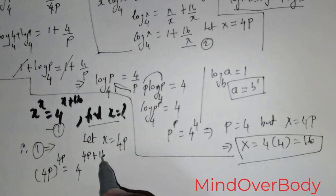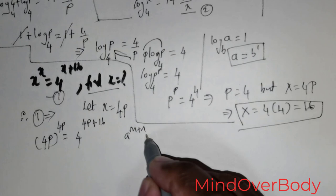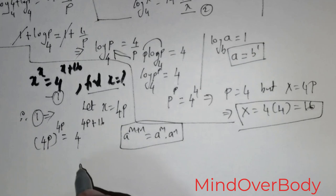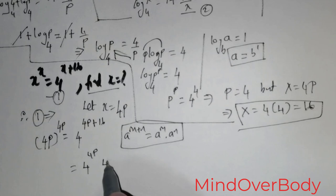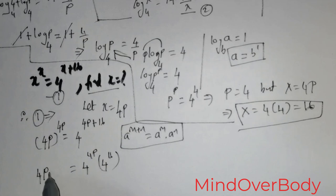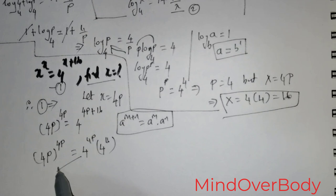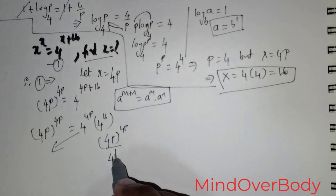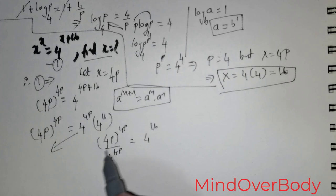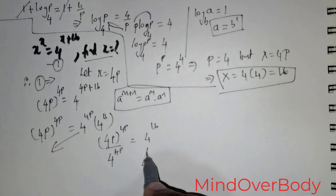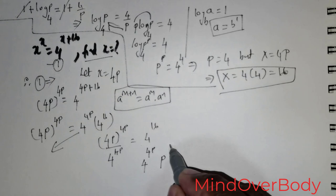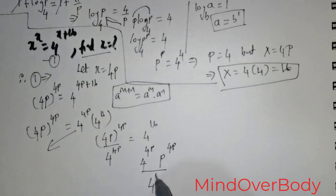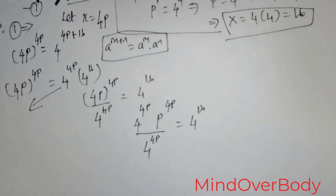We have the formula a raised to the power m plus n equals a raised to the power m times a raised to the power n. Using this formula, the right side becomes 4 raised to the power 4p multiplied with 4 raised to the power 16. On the left I have 4p raised to the power 4p. Moving the 4 raised to the power 4p to the left gives 4p raised to the power 4p divided by 4 raised to the power 4p equals 4 raised to the power 16.